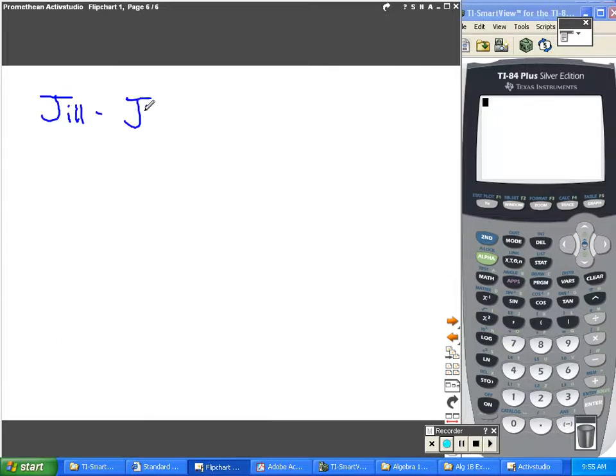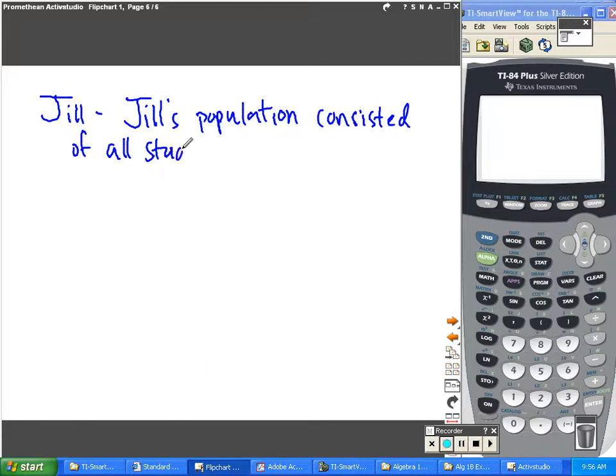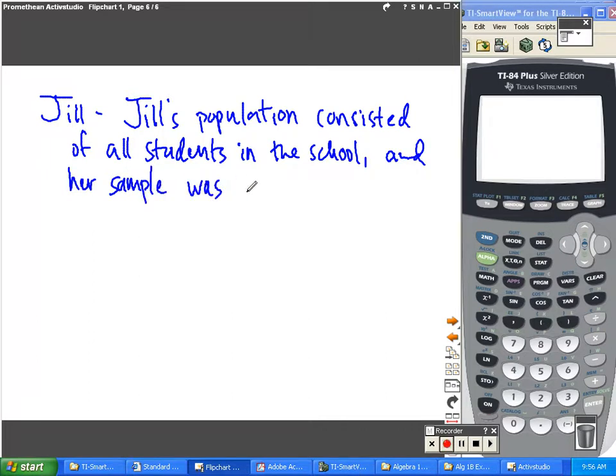Jill's population consisted of all students in the school, and her sample was simple and random.